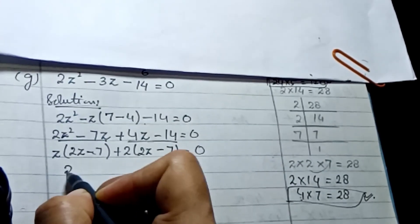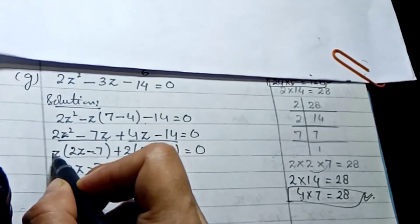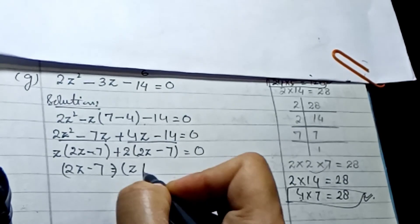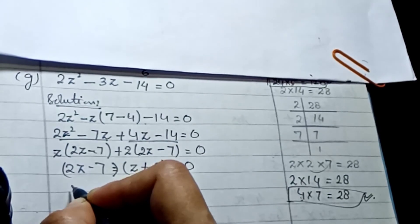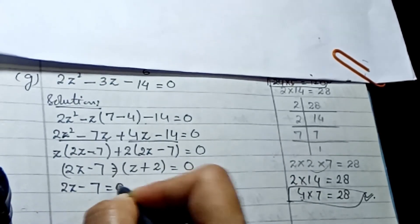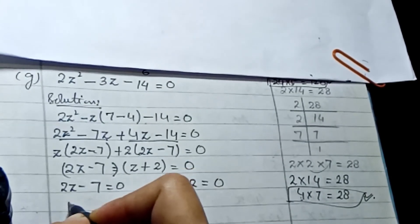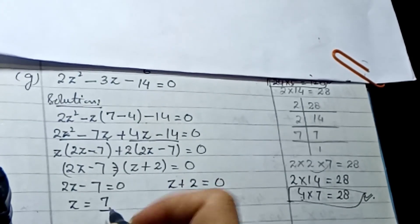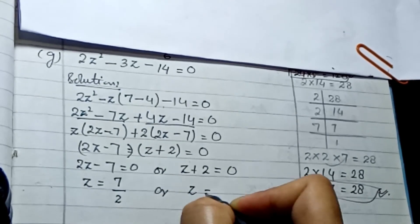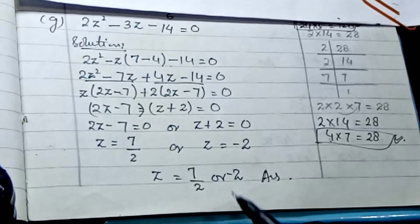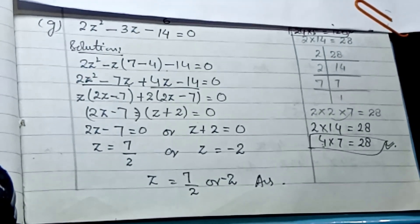Write the same bracket once — (2z − 7) — and form the other bracket: (z + 2) = 0. Applying zero product property: 2z − 7 = 0 gives z = 7/2, and z + 2 = 0 gives z = −2. So the answers are z = 7/2 or z = −2. This completes question number 5.